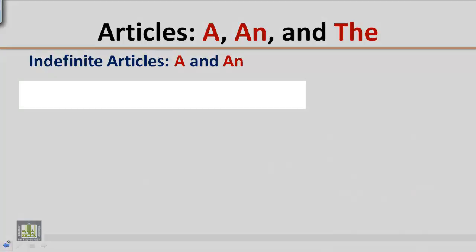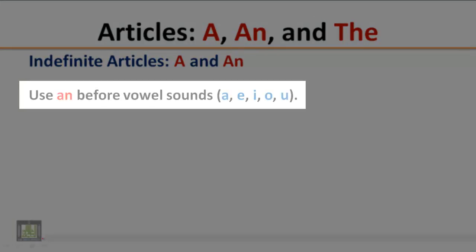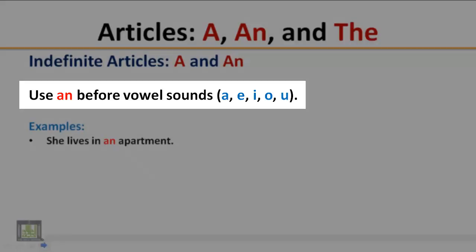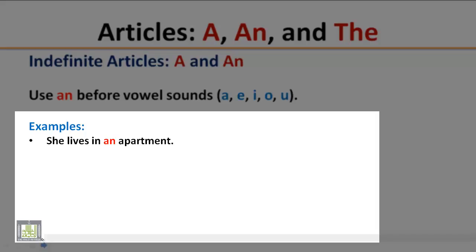Indefinite articles A and An. Use An before vowel sounds: A, E, I, O, U. Examples: She lives in an apartment. The word apartment starts with a vowel sound, so it is preceded by An. A bee is an insect. The word insect starts with a vowel sound, so it is preceded by An.